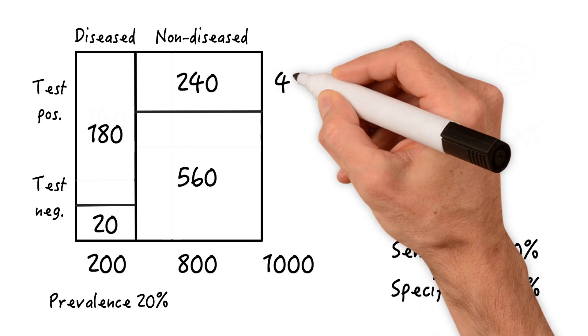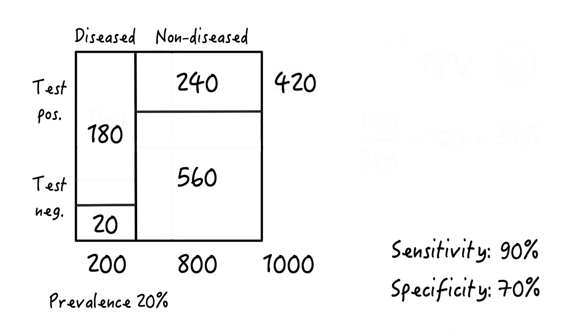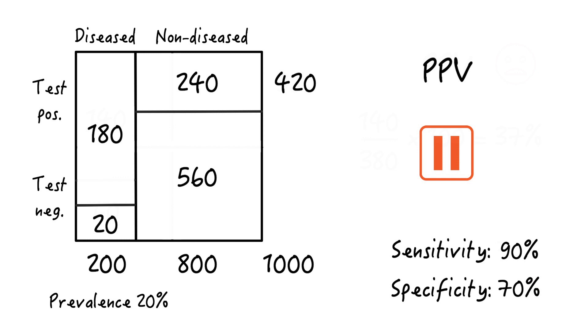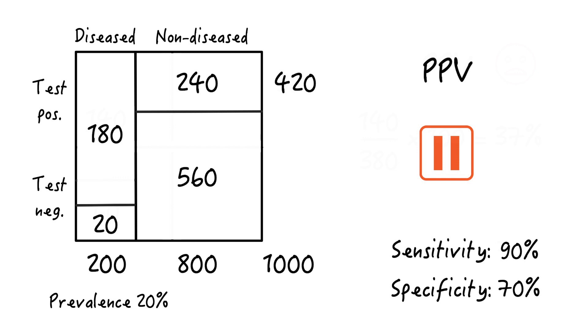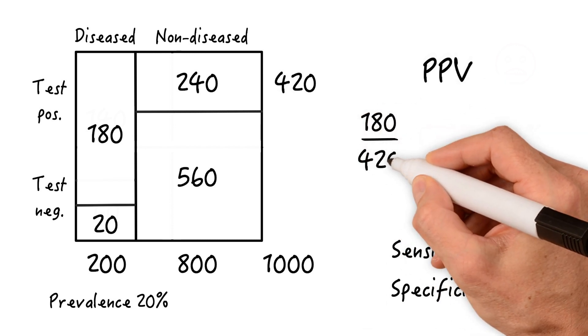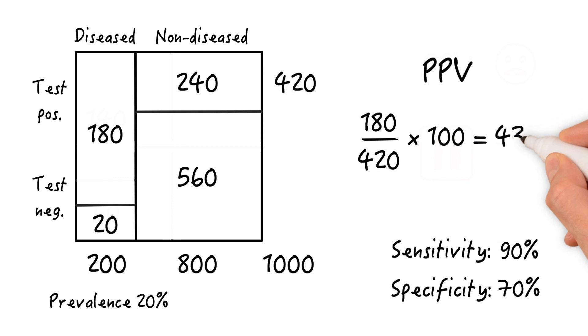So overall, we end up with 420 people who test positive. What's the positive predictive value? Maybe you want to give it a try and calculate it yourself. Pause the video and come back when you're done. So the PPV is calculated as 180 divided by 420 times 100, which equals 43%, so not a big improvement from our initial 37%, right?